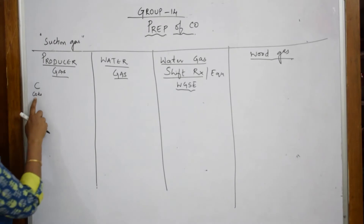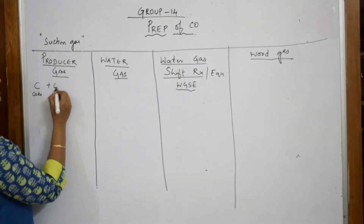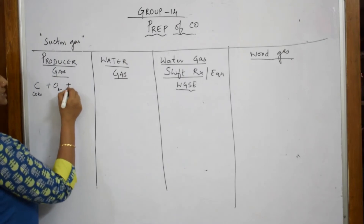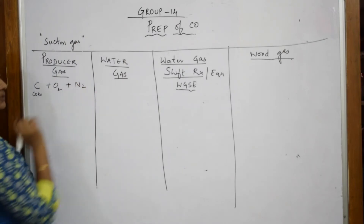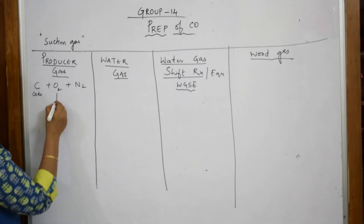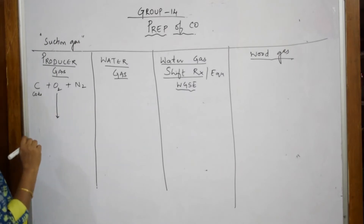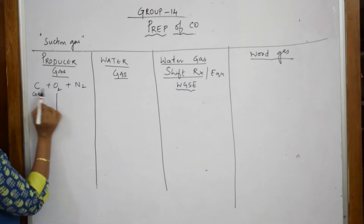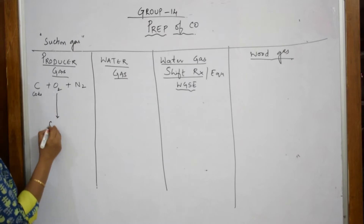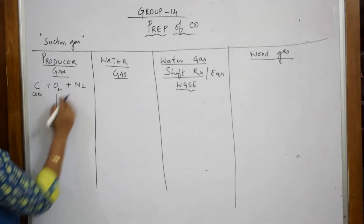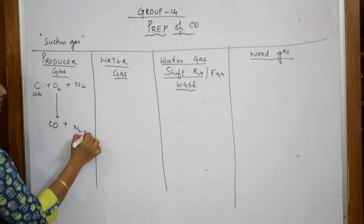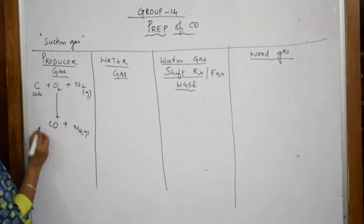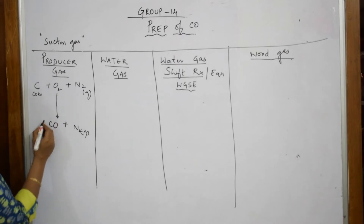I want to use coke. I am going to combust this — heat in presence of oxygen — and along with this, atmospheric nitrogen also reacts. Now observe: carbon plus oxygen gives carbon monoxide, and nitrogen gas comes out again. So let us balance it.